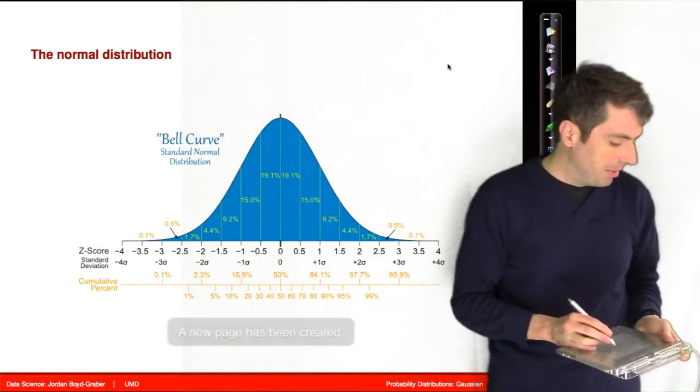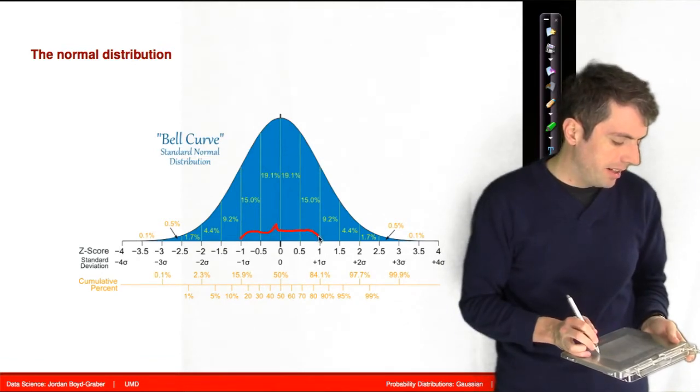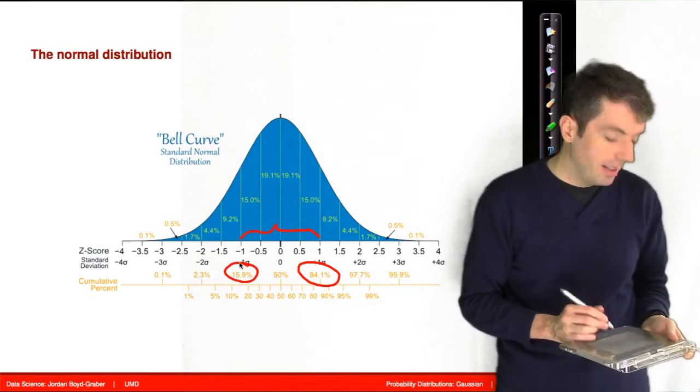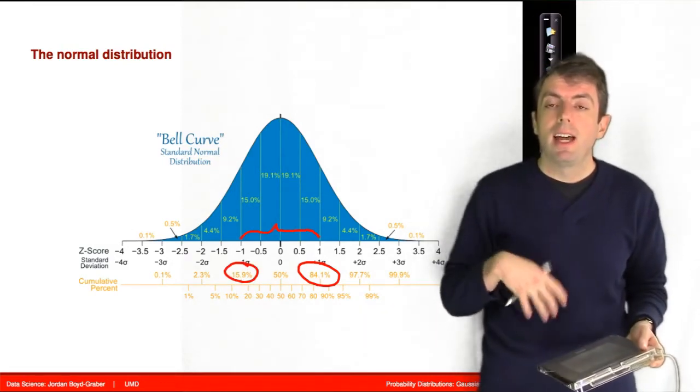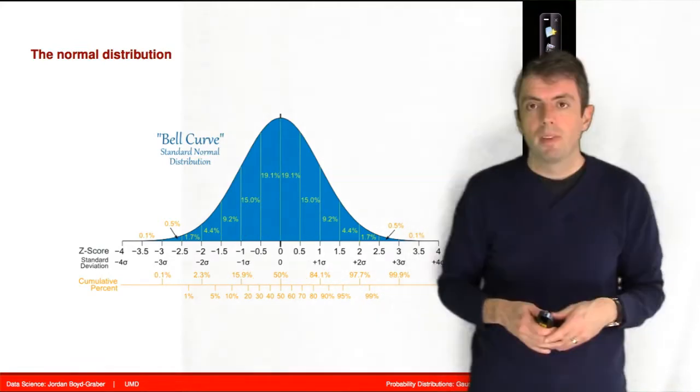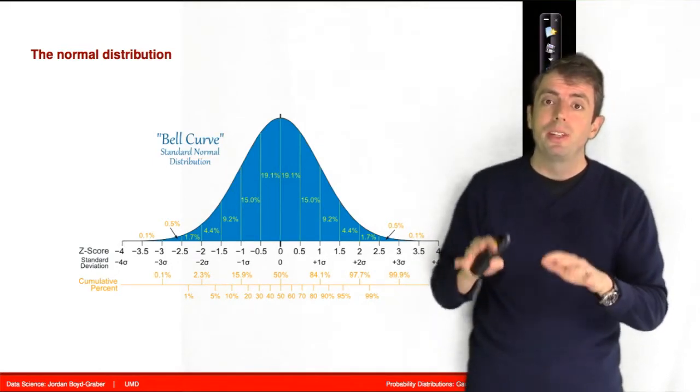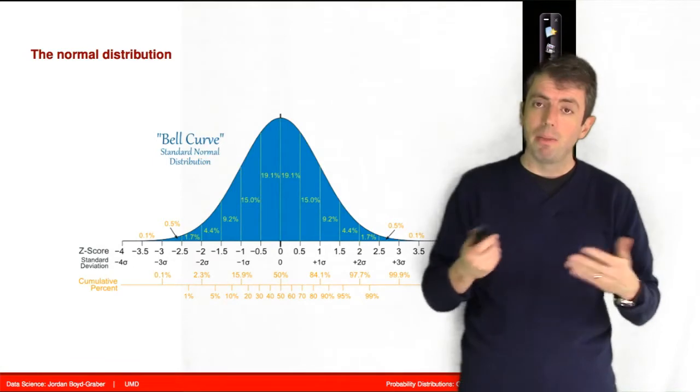The probability of getting anything one standard deviation below the mean is 15.9%. If you wanted to compute the probability of landing exactly one standard deviation within the mean, you could take this, subtract out this, and then you would get a percentage in the 60s and thus a probability of around 0.6. But as I said before, you would almost certainly use a programming language to compute these values, not doing it by hand.